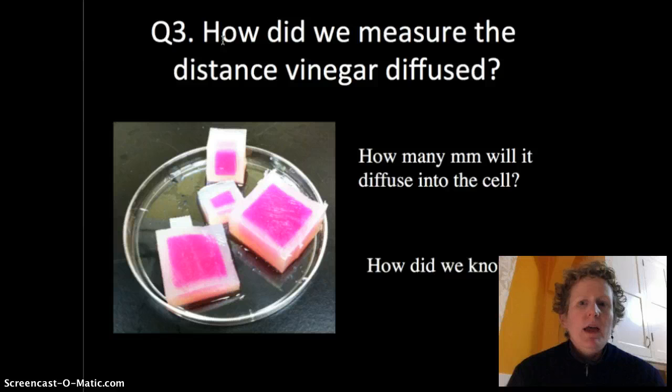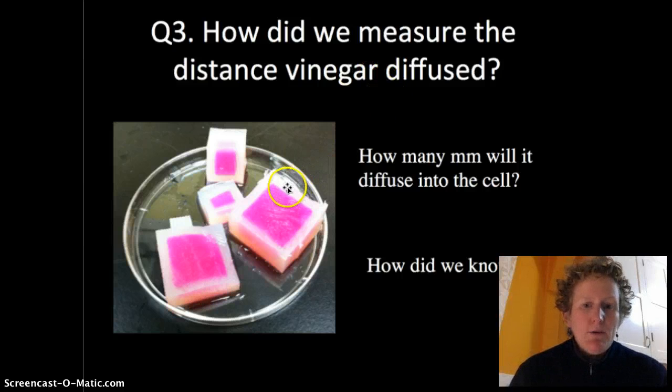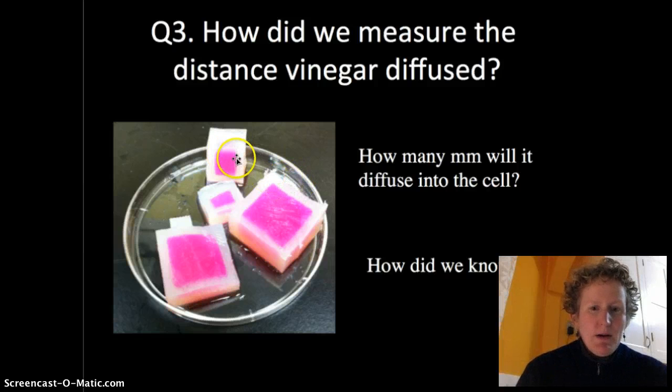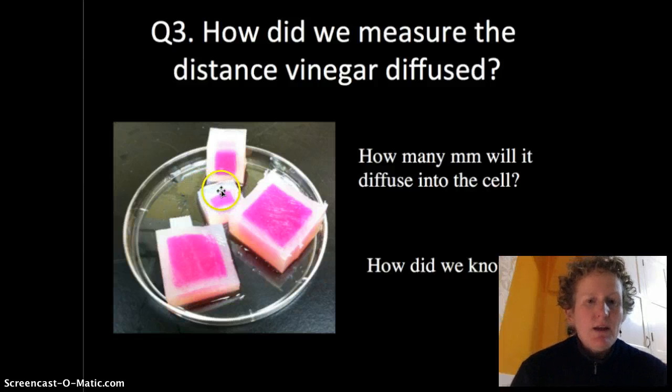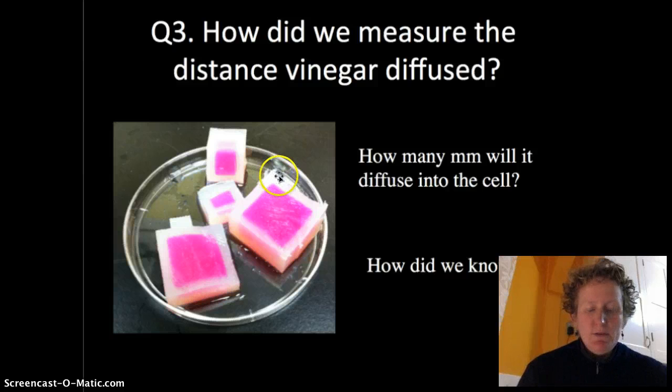Question 3. How did we measure the distance vinegar diffused? We're going to measure that in just a moment. We can take a ruler and measure the part of the cell that's white because this white part is where the vinegar diffused into the cell and turned the indicator phenolphthalein from pink to colorless, indicating that it went from basic to acidic where the vinegar diffused in.